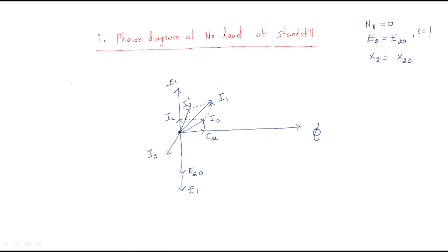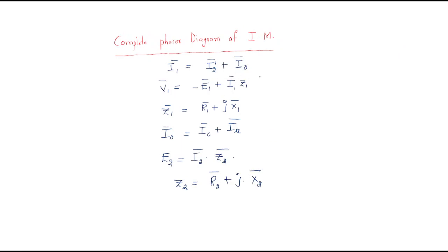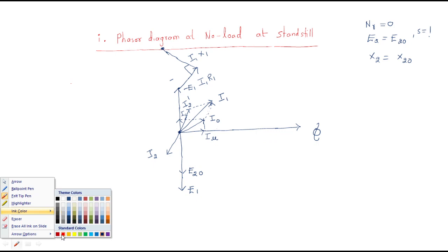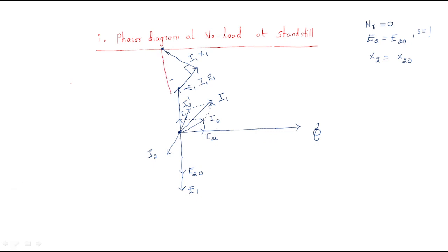The combination of minus e1 plus I1·Z1 gives the supply voltage V1. Z1 equals r1 plus jX1, so from the I1 direction we draw I1·r1, then 90 degrees phase shift gives I1·X1. The combination of minus e1 plus I1·r1 plus I1·X1 gives I1·Z1.